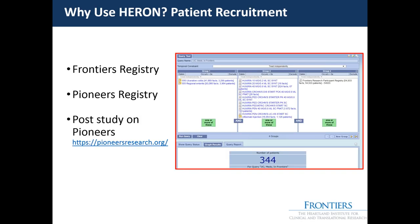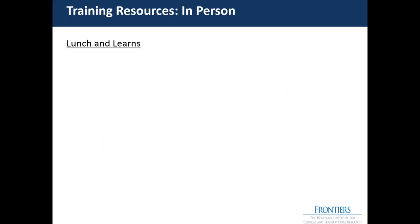The registries contain patients who have provided consent to share their contact information for research. The Frontiers registry is specific to our health system patients, and the Pioneers registry includes community patients who've agreed to participate in research. We've linked their data with their medical records specifically for those at the KU health system, in order to provide their contact information to researchers.